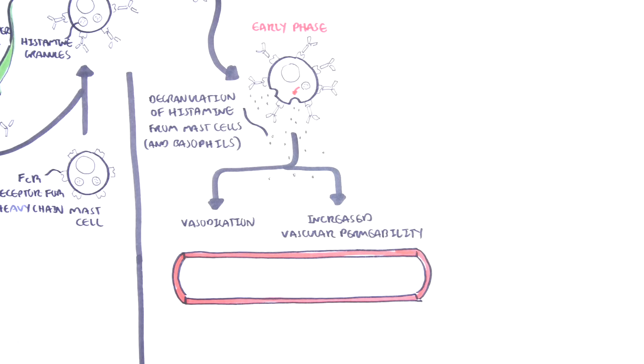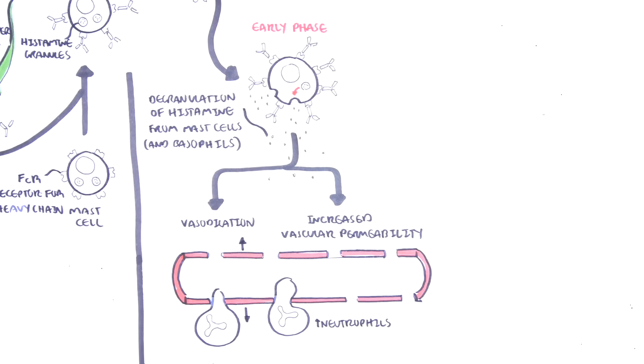Increased vascular permeability allows extravasation of neutrophils and other acute inflammatory cells and molecules, and this occurs very quickly.